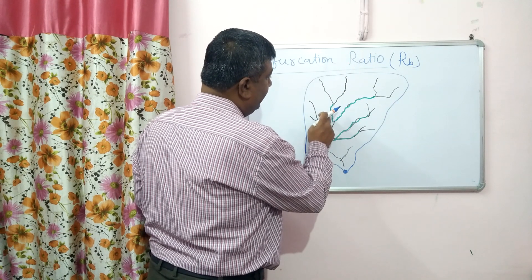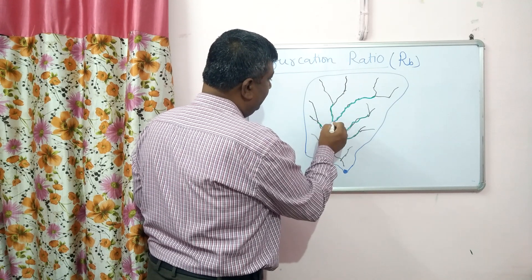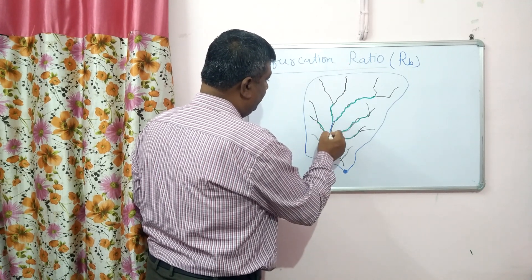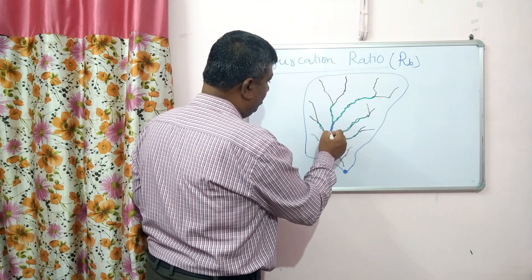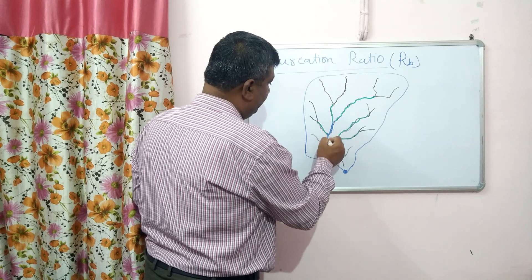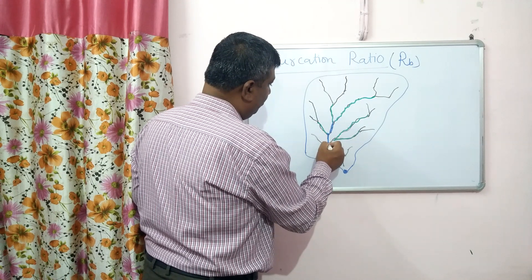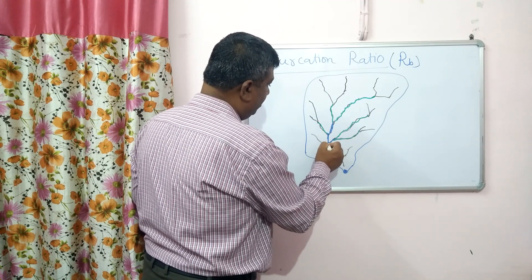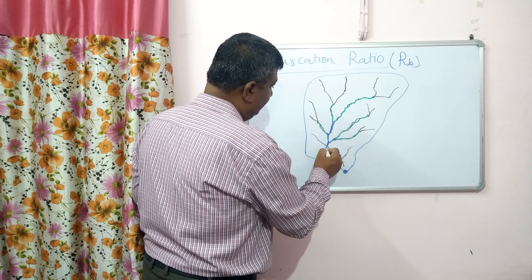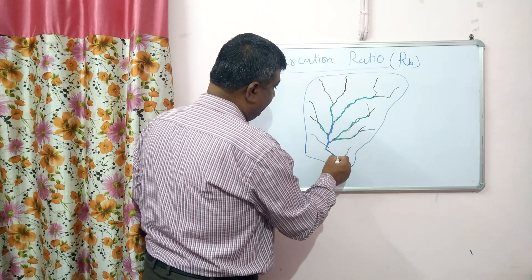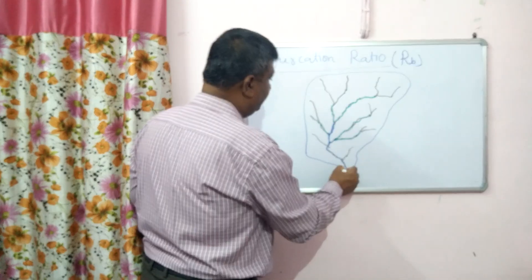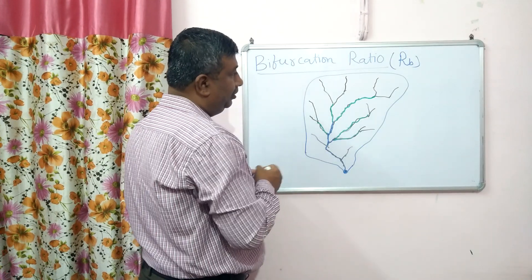This is the second order stream, and when two second order streams meet, that makes a third order stream. This is the third order stream. So this is the pattern — this is the drainage.